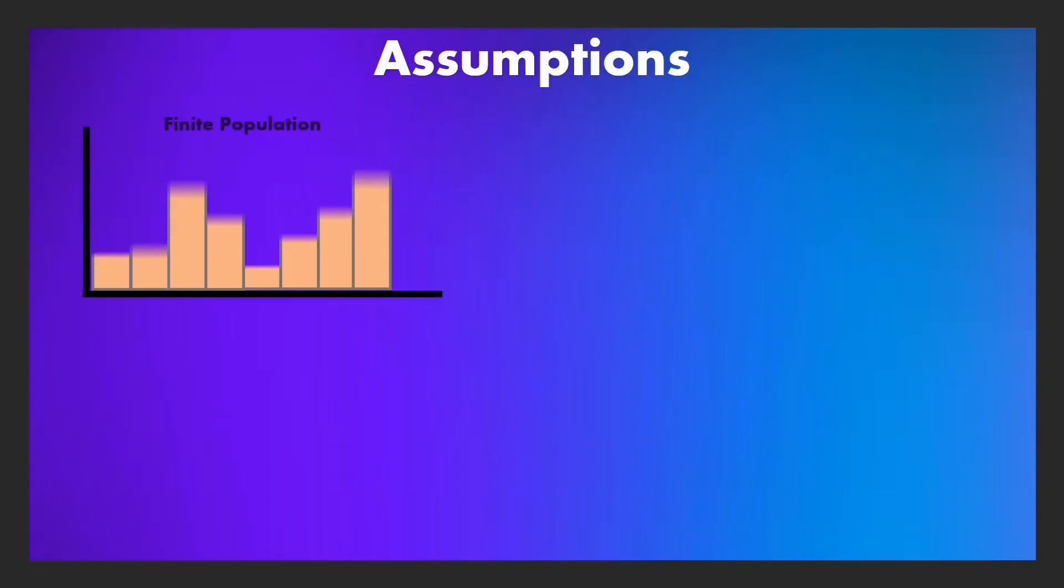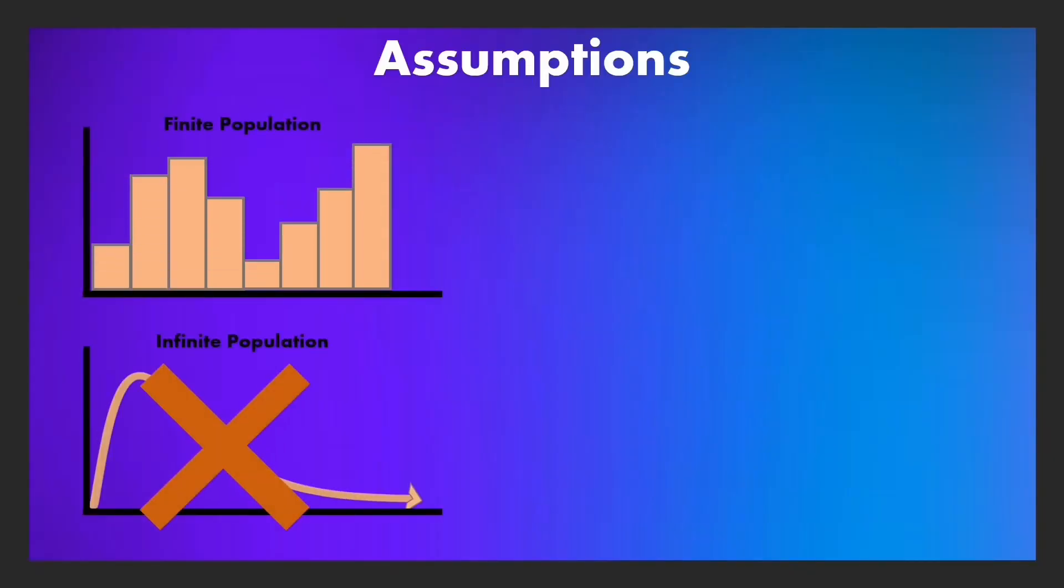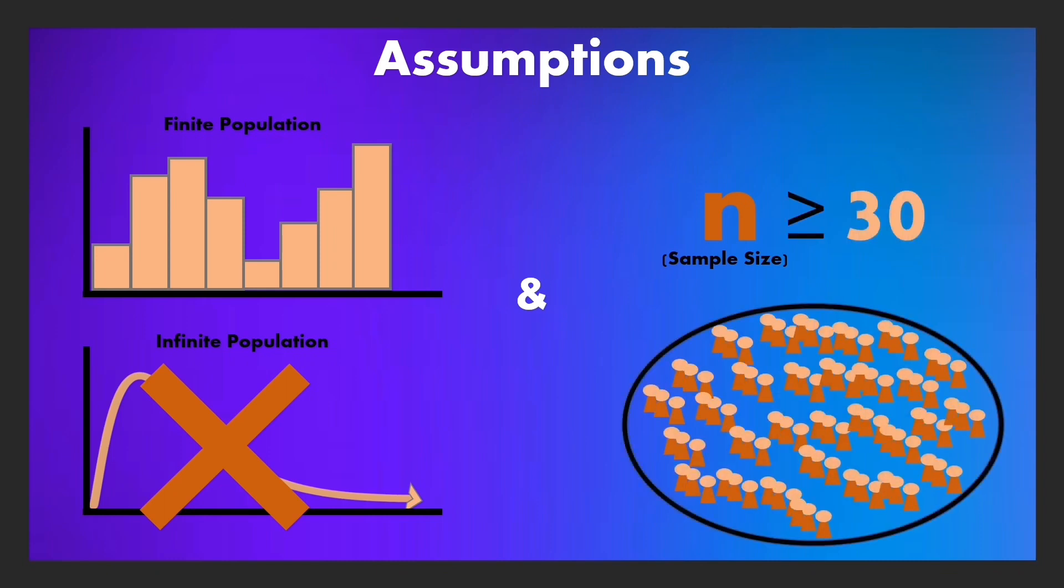This occurs as long as the distributed population is finite, and the sample size is generally 30 or more. The bigger the sample size, the more accurate. We can portray this phenomenon with these equations.